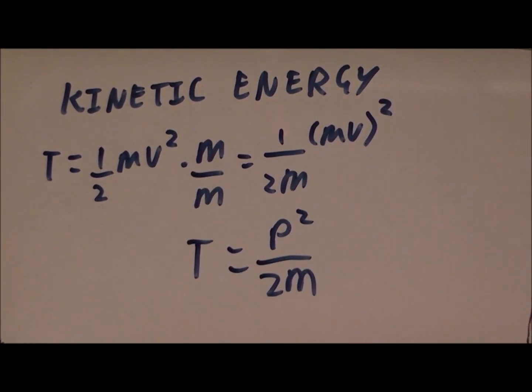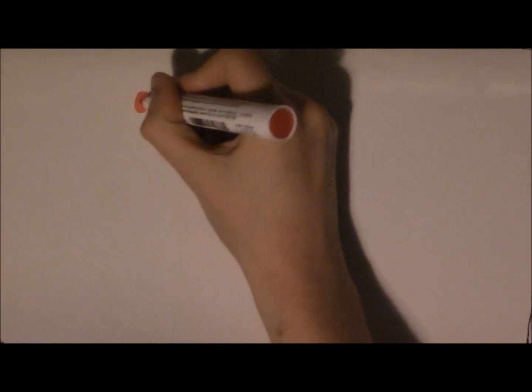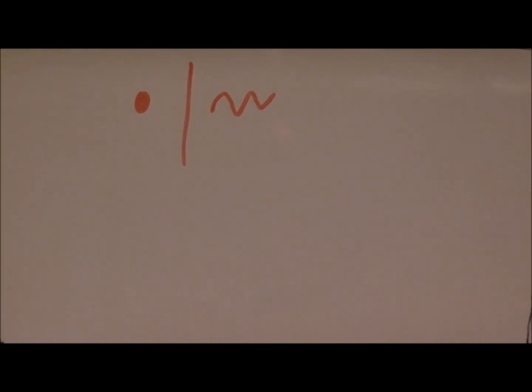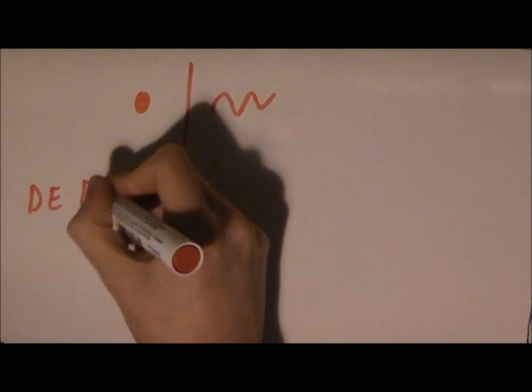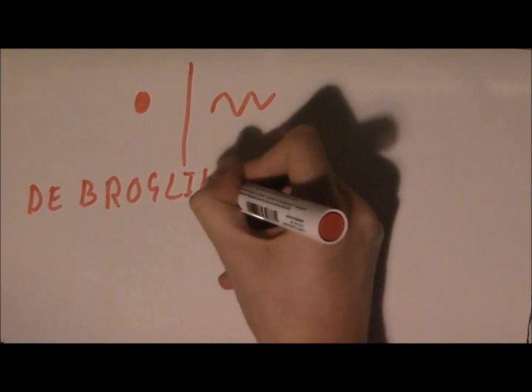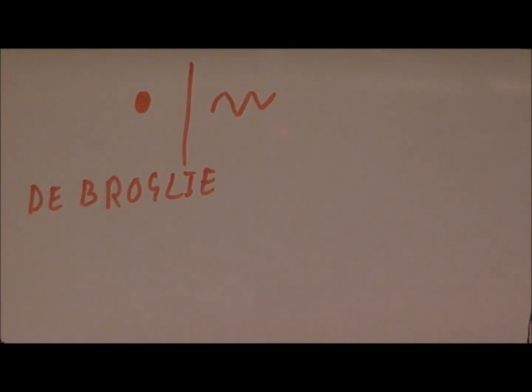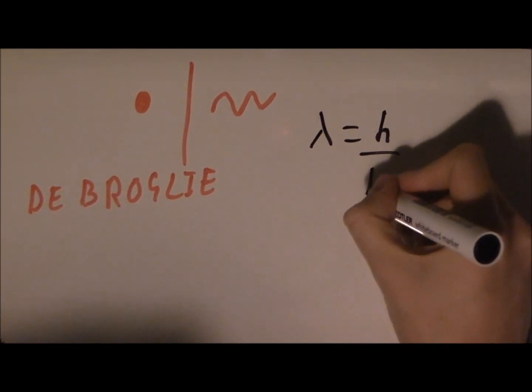You probably know that we can think of particles as waves, at least at the tiny scales where we need to use quantum mechanics. To help us move between these two ways of thinking about matter, we can use De Broglie's equation. Lambda equals Planck's constant, h, divided by momentum.